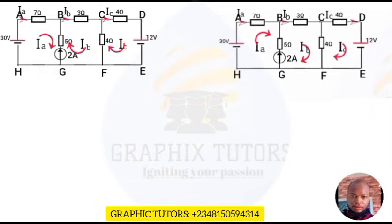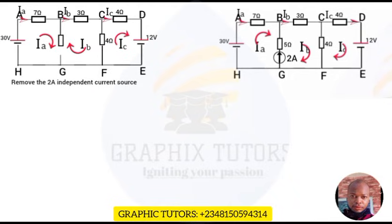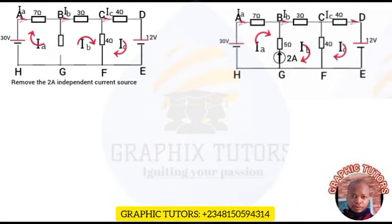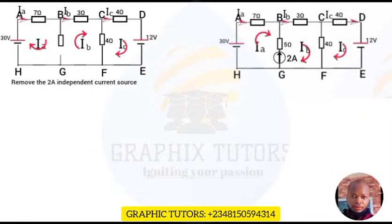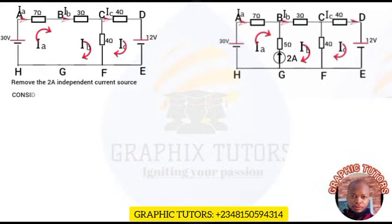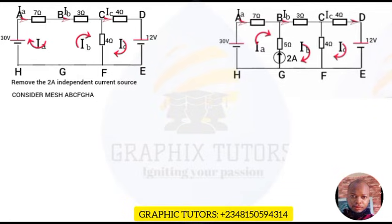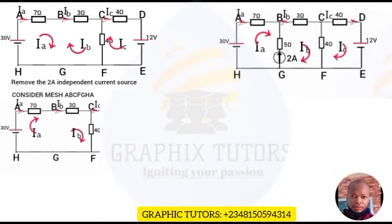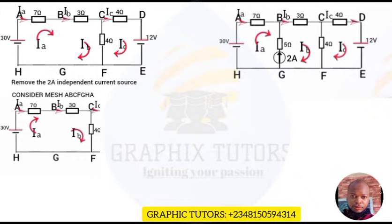To use super mesh, the first step is to remove the independent current source. When we remove it, that branch is open-circuited — current will no longer flow through it, so it is as good as not being there. We now consider the combined super mesh path: a-b-c-f-g-h-a. One thing to note is that we apply the same mesh analysis to this path to get our mesh equation.